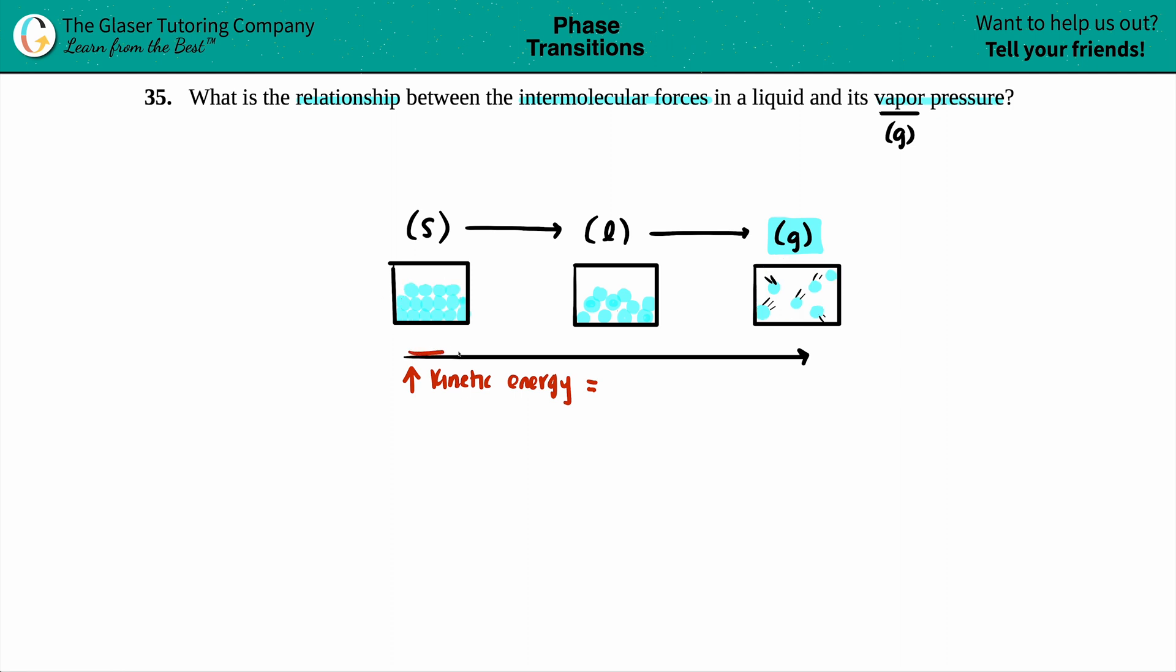So as you're going from a solid to a liquid to a gas, you're increasing your kinetic energy and you're breaking those intermolecular bonds that hold the molecules together. These gases, they're acting as independent gas molecules. So they don't have as much intermolecular forces as a solid would when they're all holding hands and hanging on for dear life. So as you increase your kinetic energy, you will decrease your intermolecular forces.